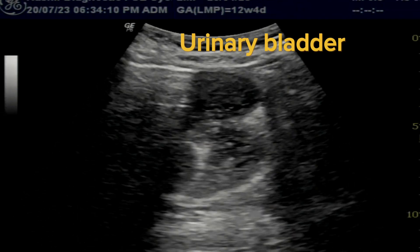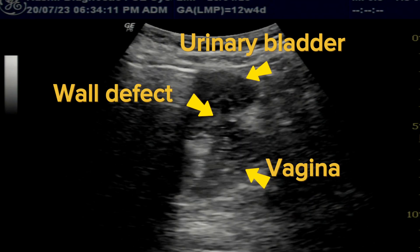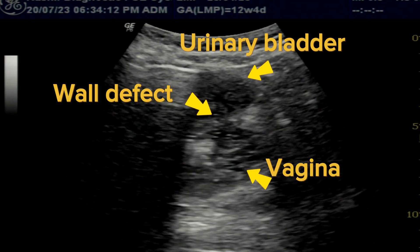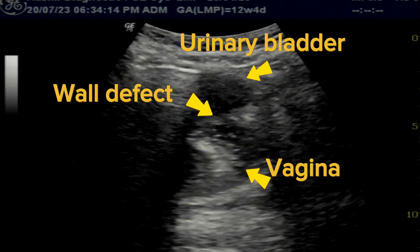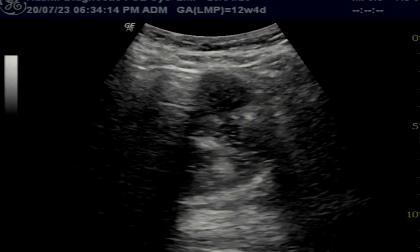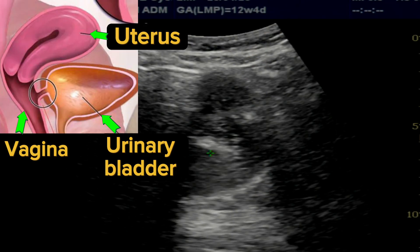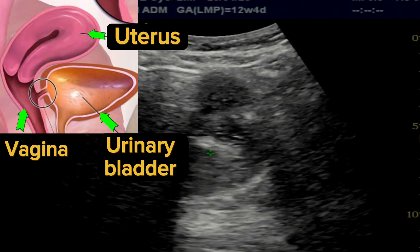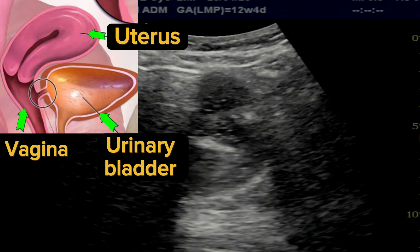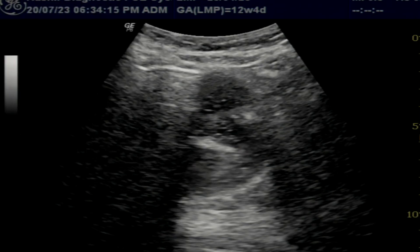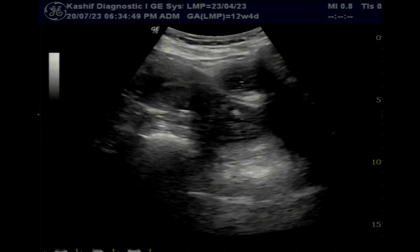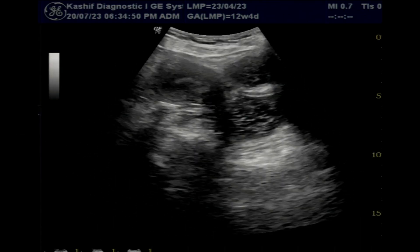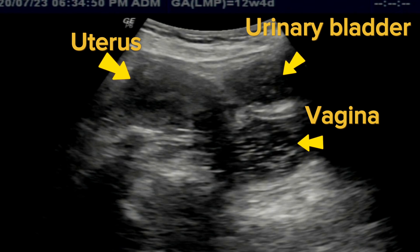You can see the urinary bladder, vaginal cavity, and urinary bladder posterior wall defect, with instant flow of fluid in the vaginal cavity. This results in involuntary continuous discharge of urine through the vagina.